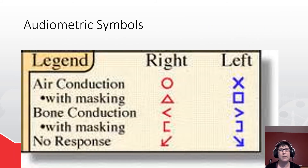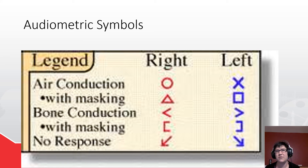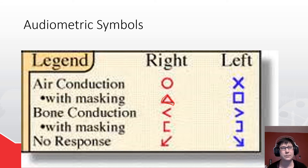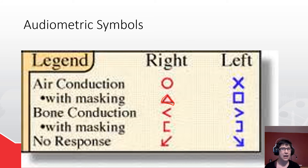Here are some examples of audiogram symbols. Most audiologists mark red for right and blue for left, circles for right, X for left. Masking uses a triangle versus a square. There are a few Jurger devotees who do the split audiogram — you will encounter them. Most of the ones that still do split audiograms are in Houston, like Ben Taub.